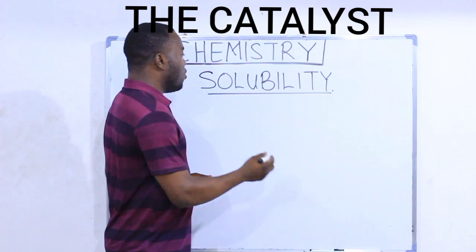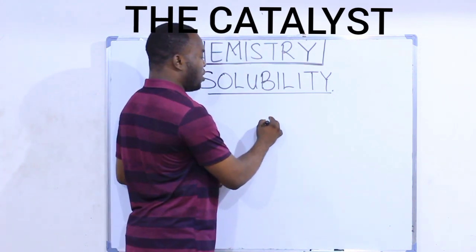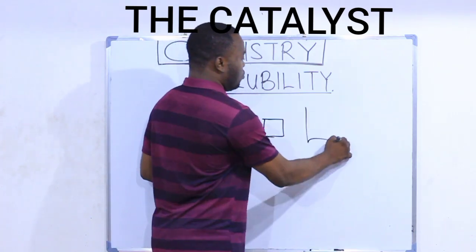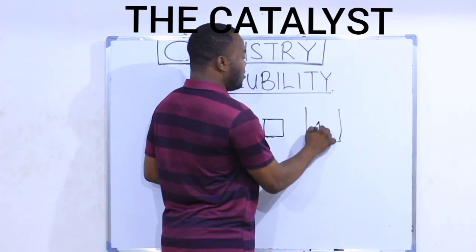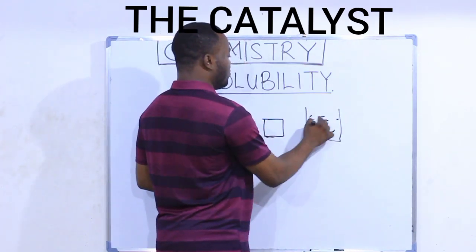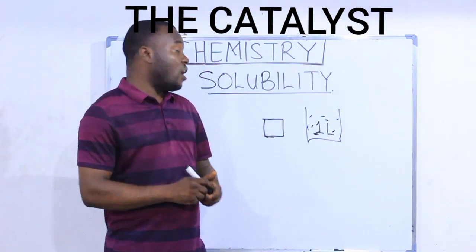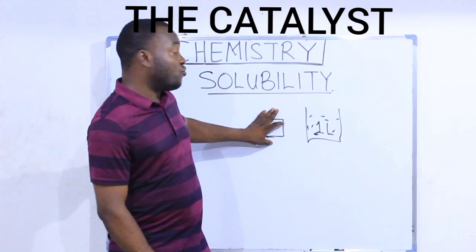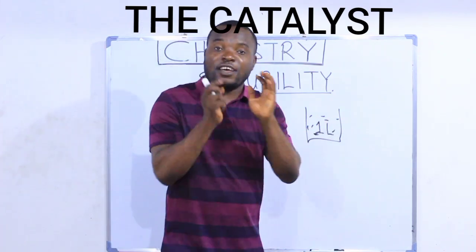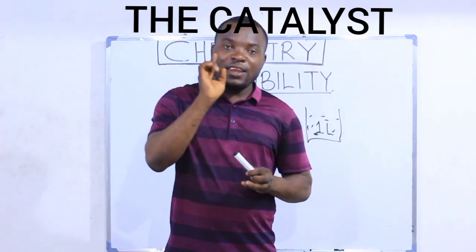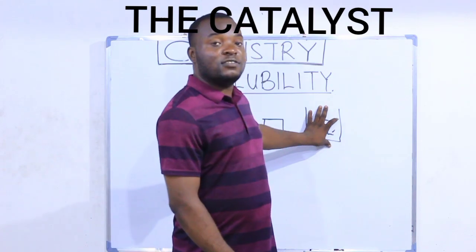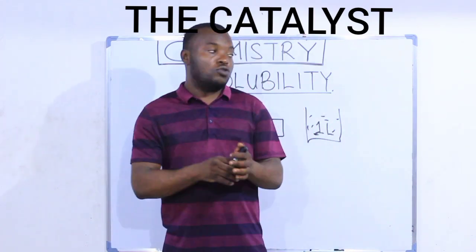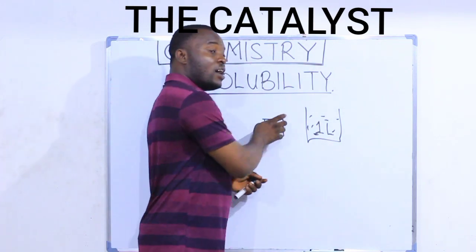Let's take water for instance. If I want to dissolve a solid cube of sugar inside one liter of water, the total mass of this cube of sugar that can saturate one liter of water at a given temperature is the solubility of that sugar at that point.